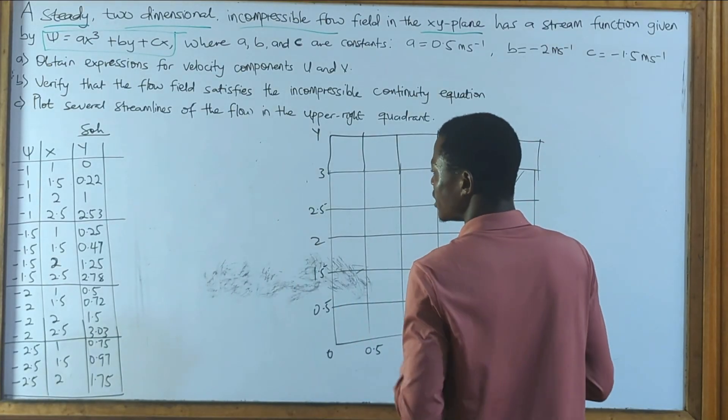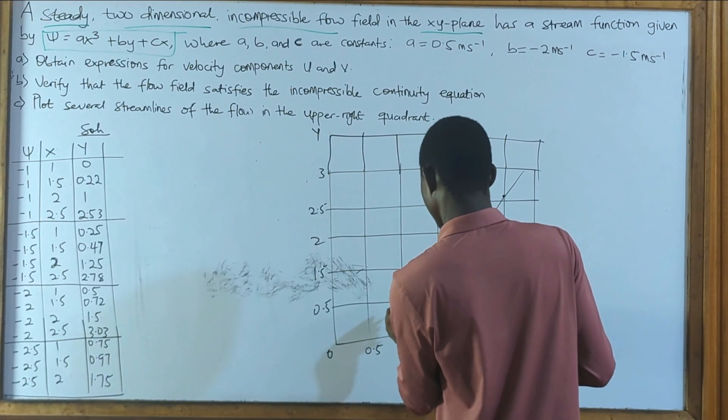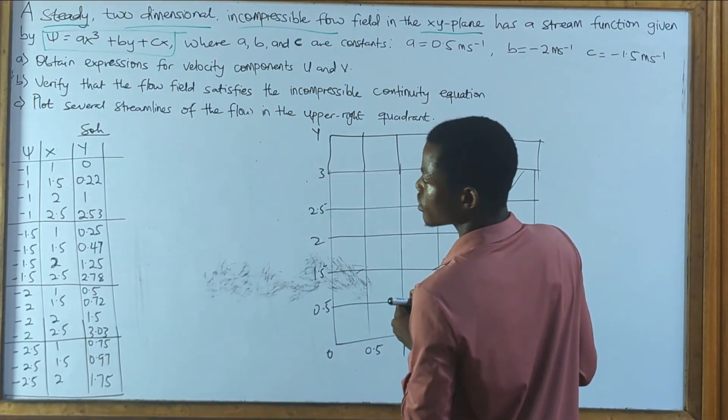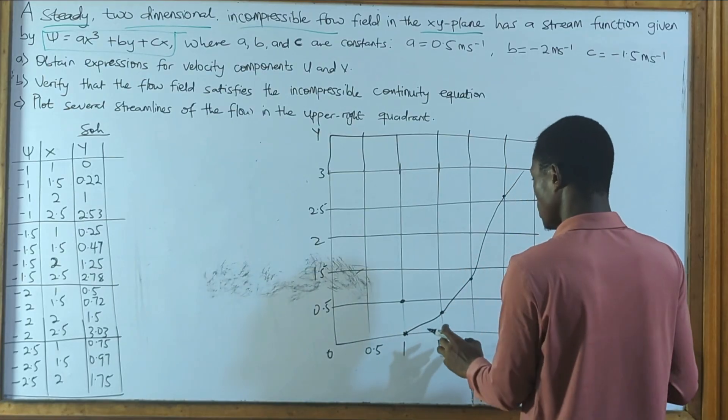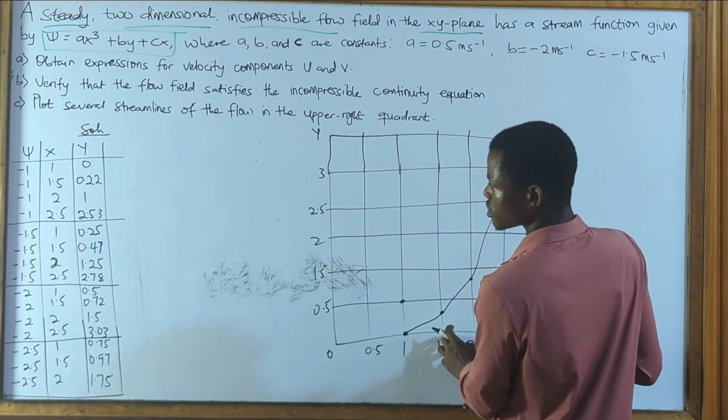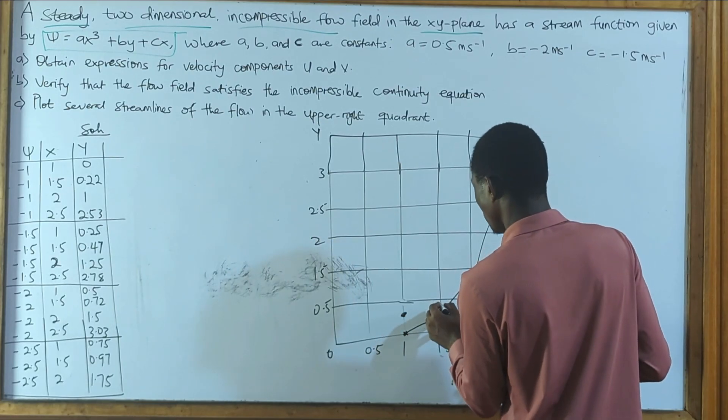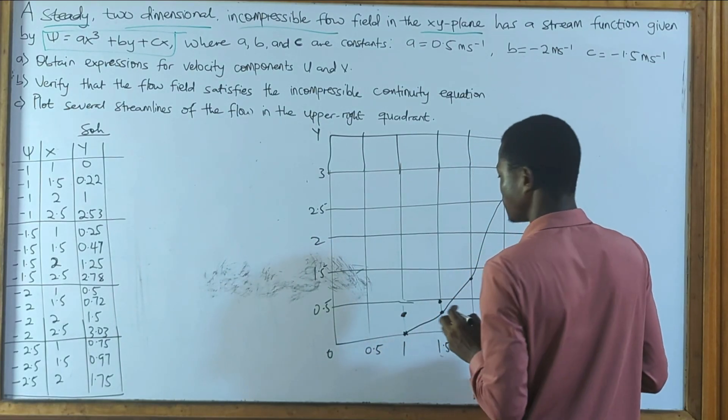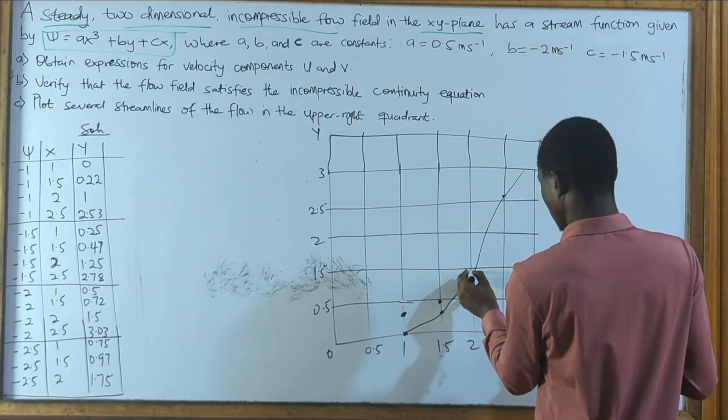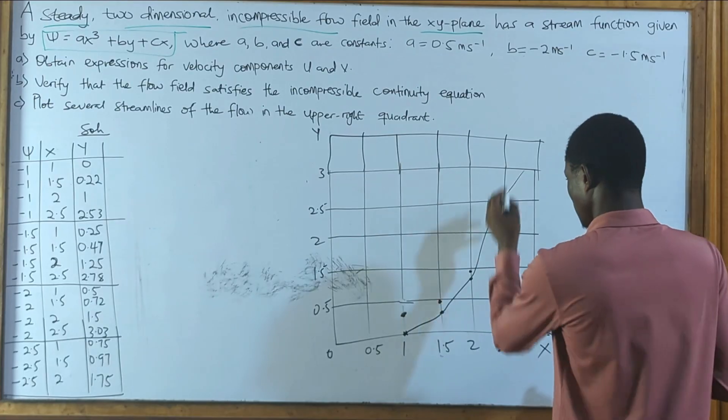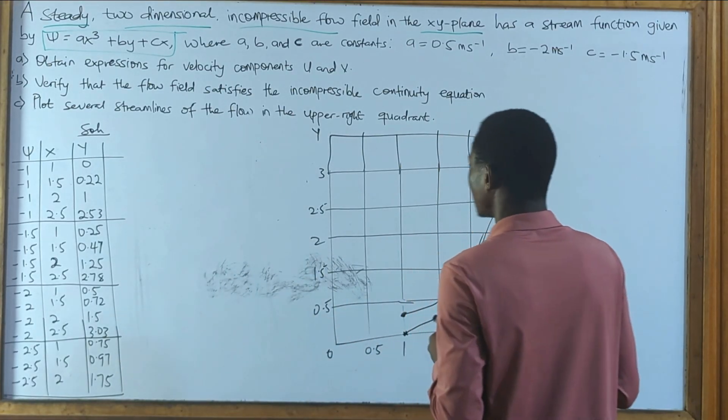So you plot for the next streamline. That's 1, 0.5, so 1, 0.5 here. Then we move on to 1.5, 0.47. So 1.5, 0.47. Sorry, it was 1, 0.25. So that's it here. Then 0.47 should be somewhere here. Then we move on to the next one. That's 2, 1.25. So 2, 1.25, somewhere here. And so on. So something like this. Then the next one follows as such.